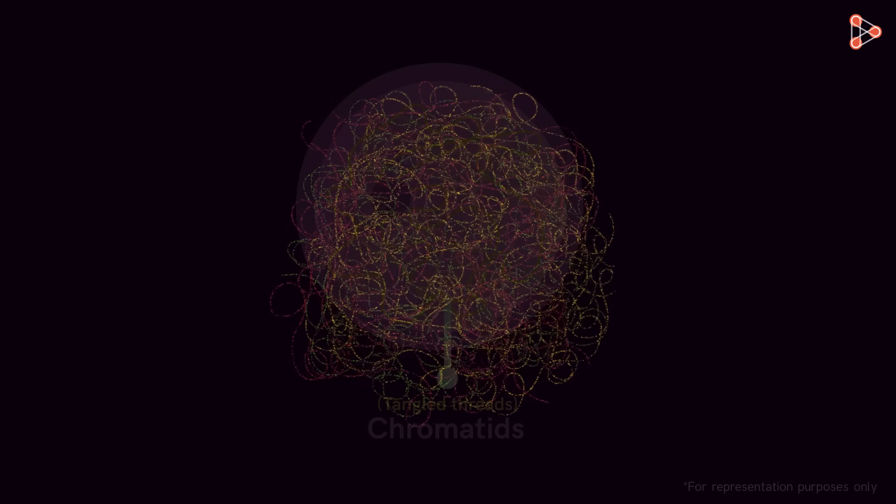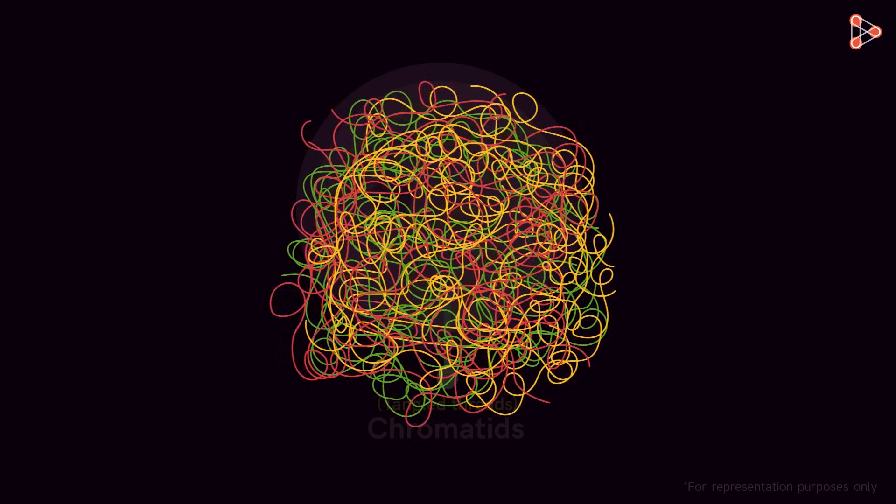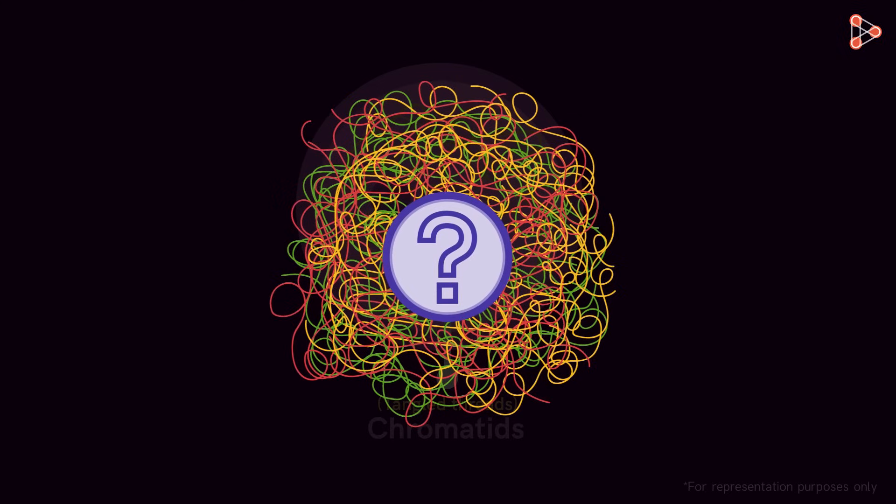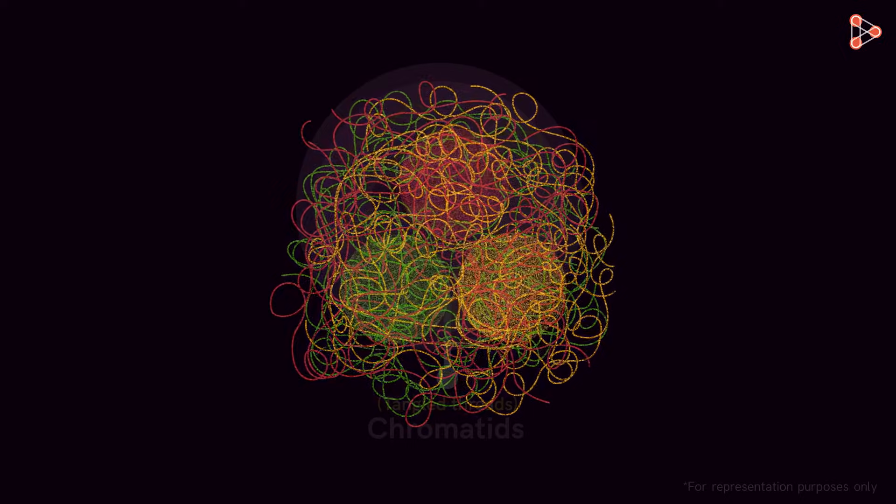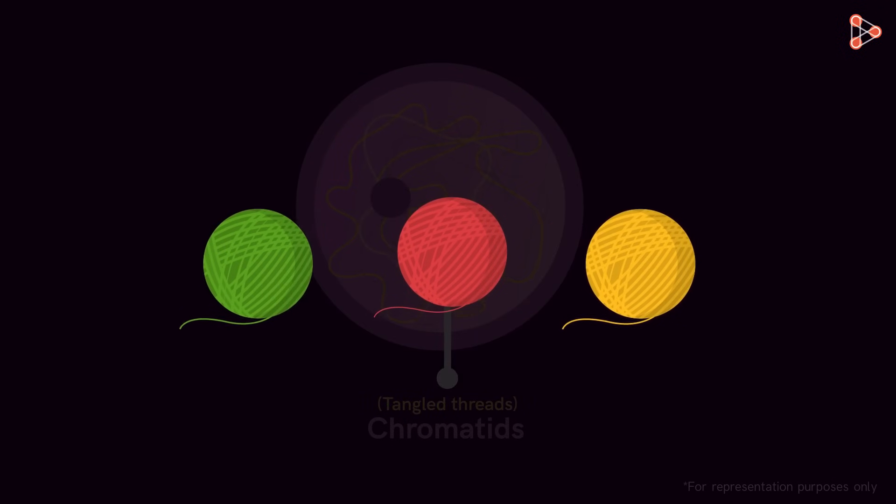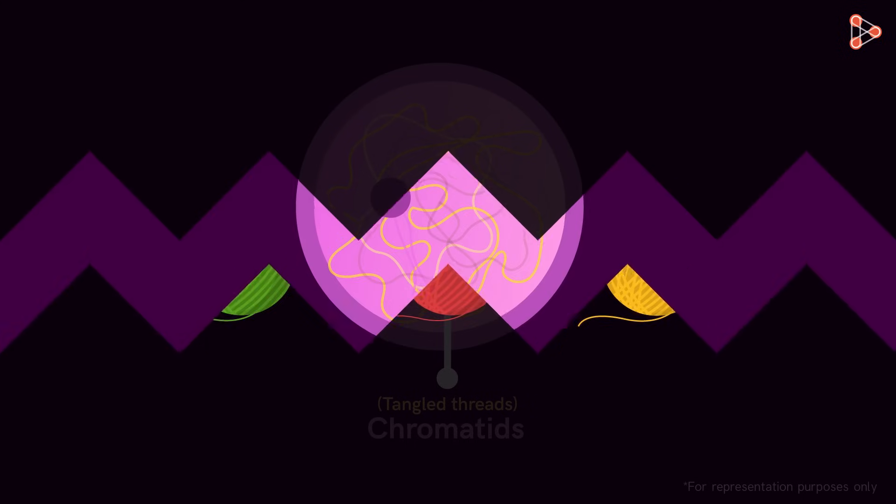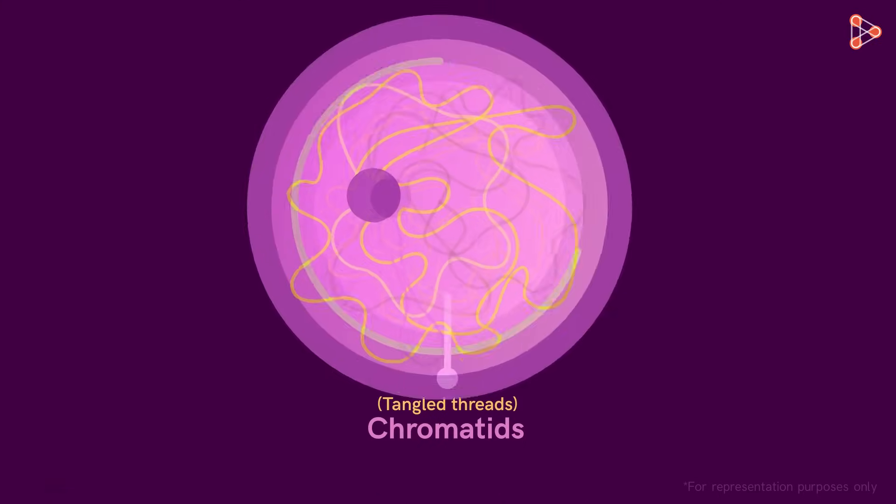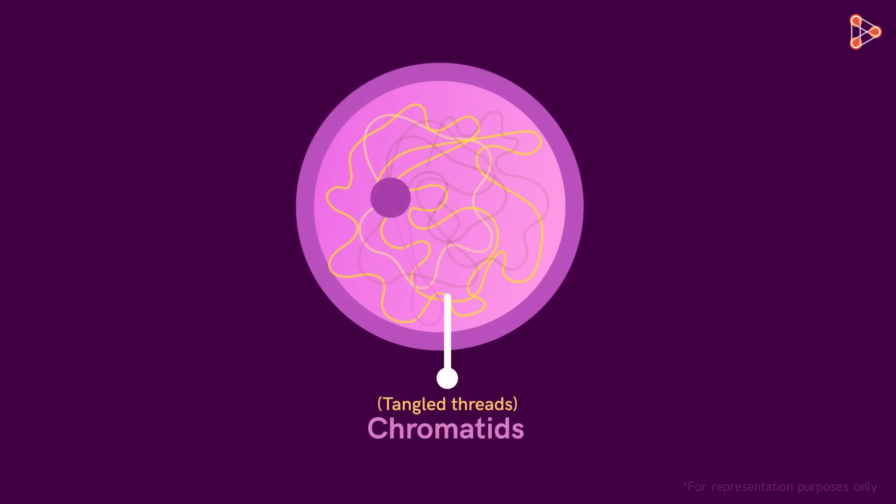Imagine we have these different colored threads tangled together. If we were to separate them, then what should be the first thing we should do? We will first separate each thread and then make separate bunches. In a similar way, even the cells separate these chromated threads.